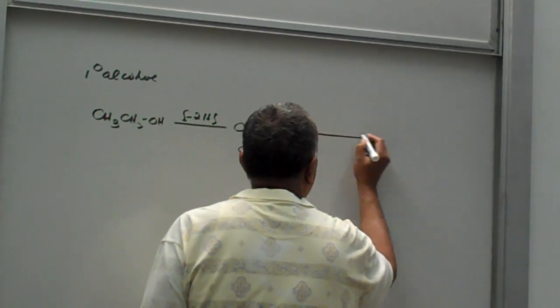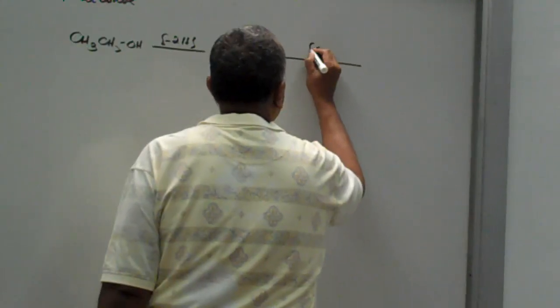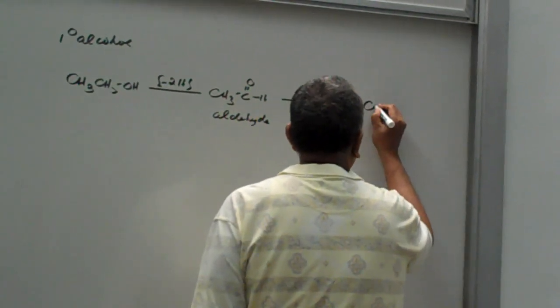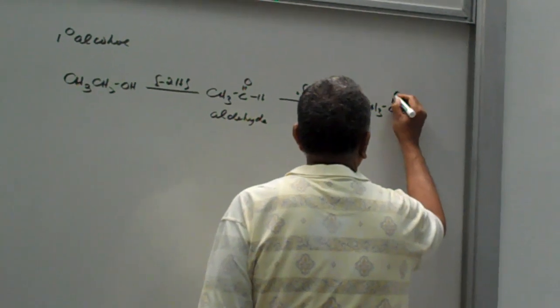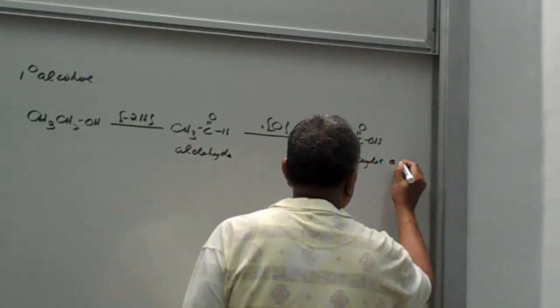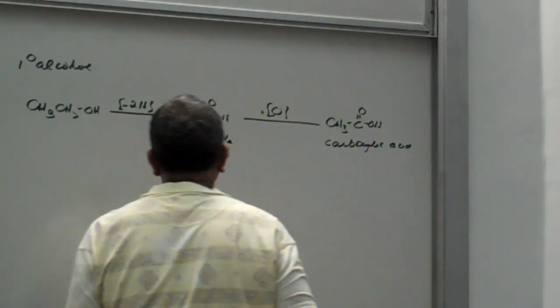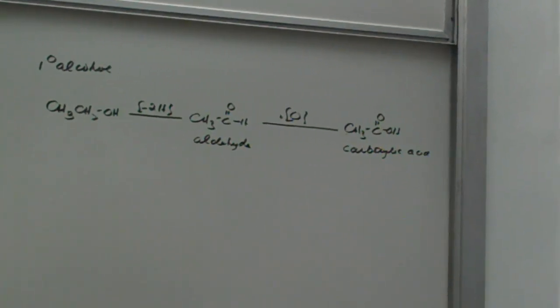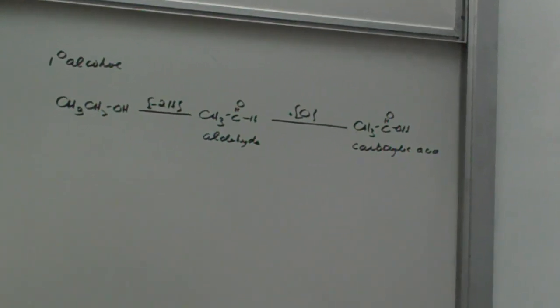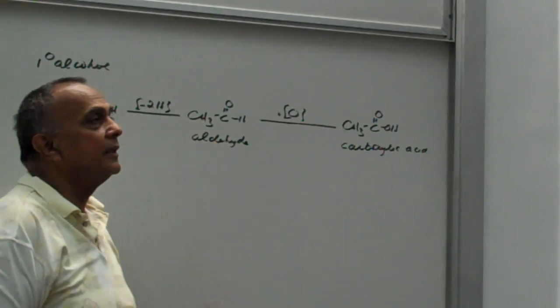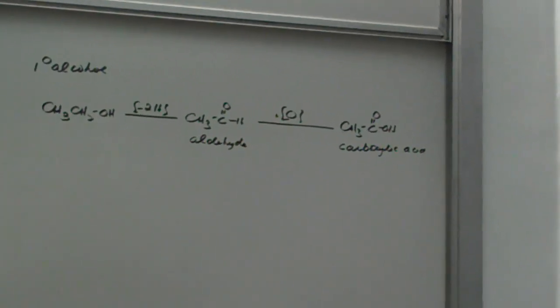If I carry out the oxidation to completeness, I get a different organic molecule called a carboxylic acid. So, if I oxidize it mildly, I get an aldehyde. If I oxidize it completely, it goes to a carboxylic acid.